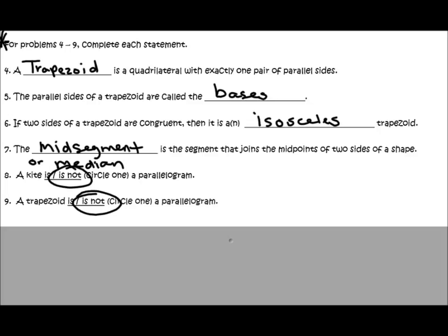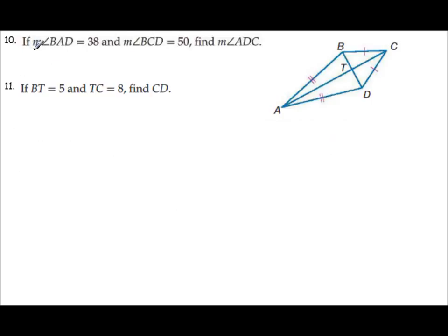Make sure that you read each one of these and that you truly understand why I chose the word or answer I chose for each question. Now there's some reading involved: if the measure of angle BAD is 38, and the measure of angle BCD is 50, find angle ADC. We can tell this is a kite because the consecutive sides are congruent. Pause the video and see if you get what I get. You should have gotten 136 degrees. If you didn't, raise your hand or ask a neighbor.